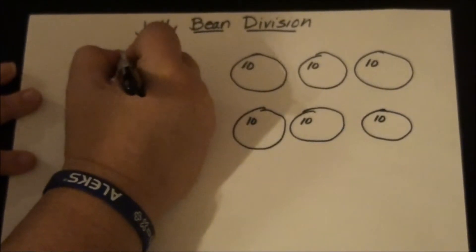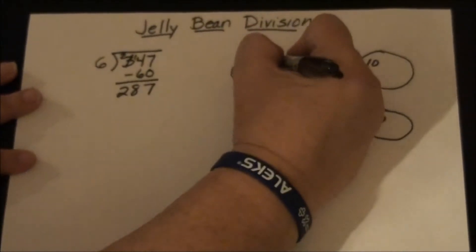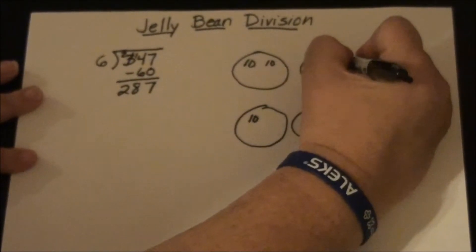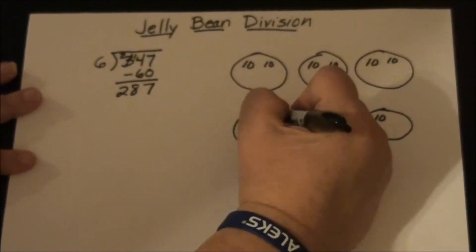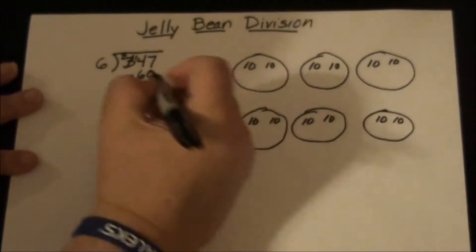So now we have 287. So let's do another 10. I'm only a third grader, so I'm going to play it kind of conservatively until I get the hang of these numbers. So that's another 60.